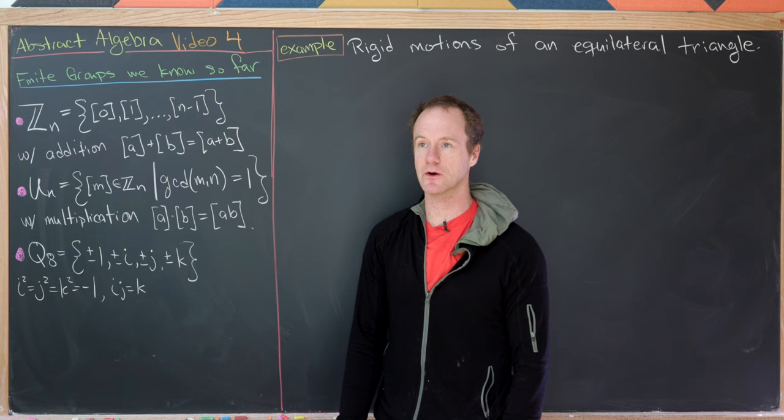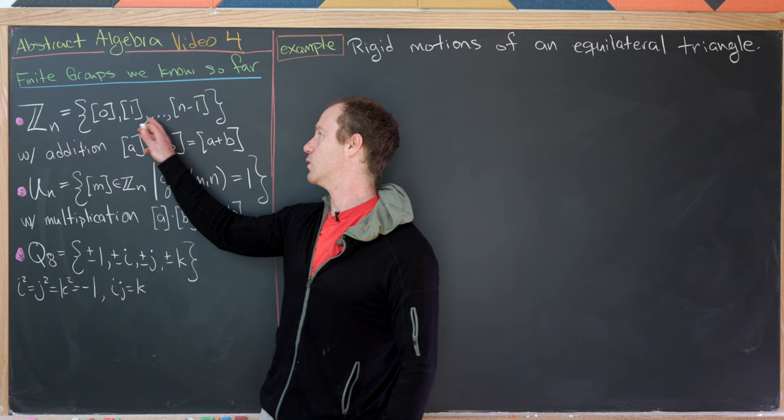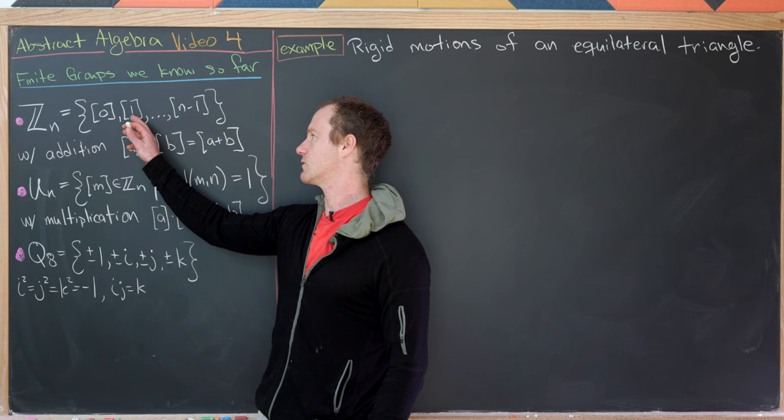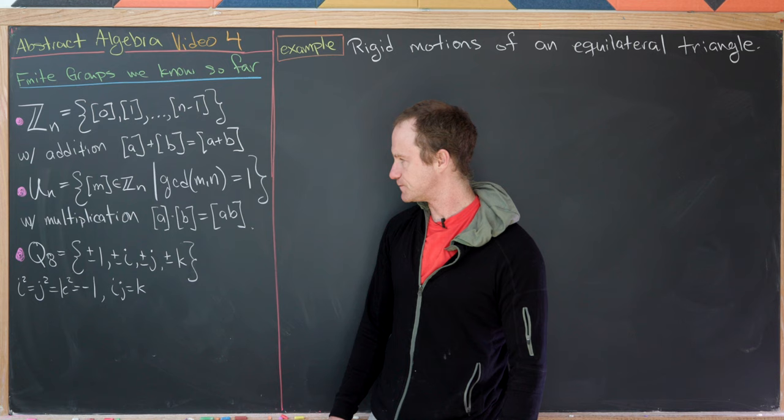When working in Zn without reference to other groups, instead of writing equivalence classes with brackets we just write them as numbers: 0, 1, 2, all the way up to n minus 1. When you perform addition you just reduce mod n afterward. We did a bunch of examples of that in the previous video.